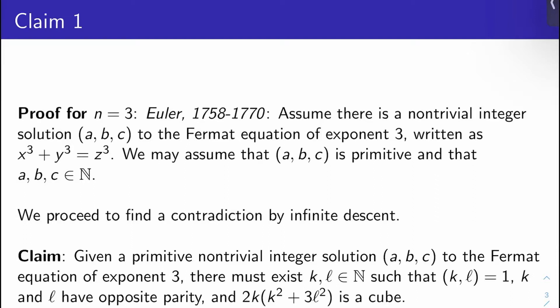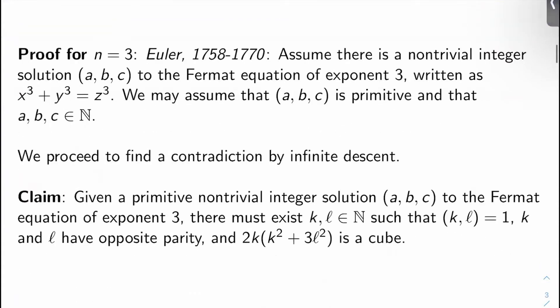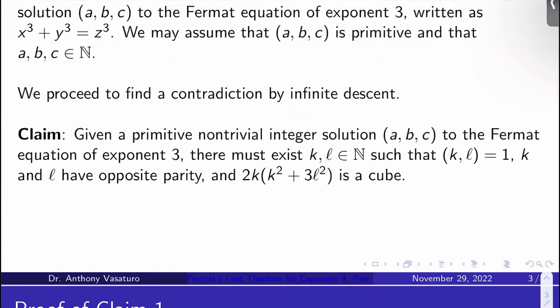Proof for n equals 3, Euler 1758 to 1770. We're going to go by contradiction and try to get a contradiction by infinite descent, much like we did for the exponent 4 case last video. We'll assume there is a non-trivial integer solution A, B, C to the Fermat equation of exponent 3, written as x cubed plus y cubed equals z cubed. We can assume that A, B, C is primitive — meaning any two of the three numbers are co-prime — and that A, B, and C are positive. We're going to proceed to find a contradiction by infinite descent, basically producing a strictly decreasing infinite sequence of positive integers.